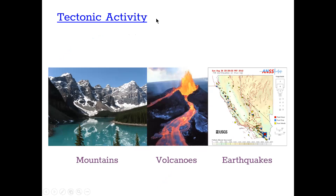Plate tectonics creates many different landscapes and hazards. At a convergent plate boundary you might see large mountain ranges such as the Himalayas. At a convergent oceanic boundary you may get volcanoes, as seen with the Japanese islands formed by subduction. At a transform plate boundary like California's coast, you get a lot of earthquakes — the sliding of the Pacific Plate along the North American Plate creates many different earthquakes.